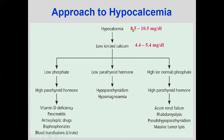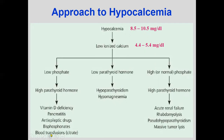If calcium is less than 8.5, it must be albumin-corrected. Ionized calcium or corrected calcium level should be measured. If low, measure phosphate level and then PTH. If PTH is high, conditions to consider include vitamin D deficiency, pancreatitis, anti-epileptic drug use, bisphosphonates used for osteoporosis, and blood transfusion with excess citrate.